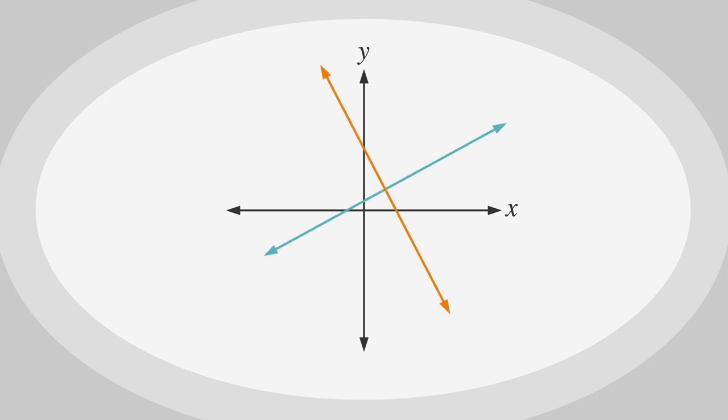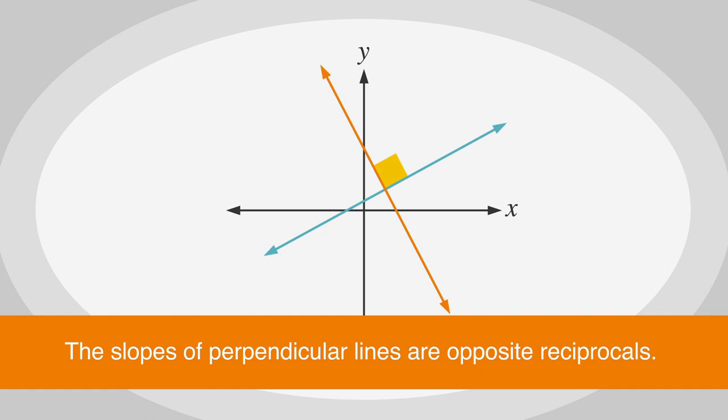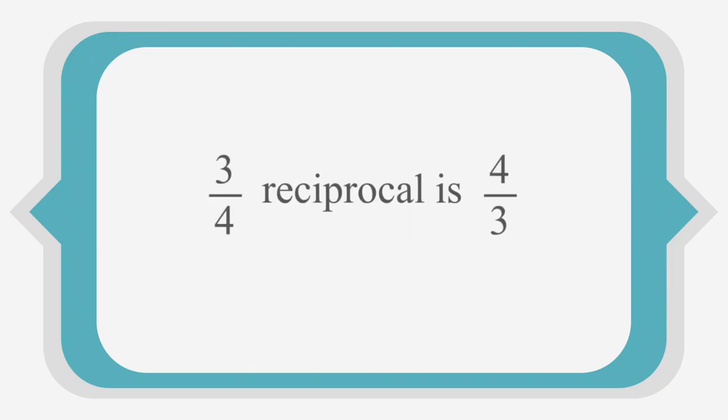Next, if two lines meet at a 90-degree angle, they are perpendicular. The slopes of perpendicular lines are opposite reciprocals of each other. You probably know that the reciprocal of a fraction is a fraction turned upside down. For example, the reciprocal of 3 over 4 is 4 over 3. To get the opposite reciprocal, you just have to add one more step and change the sign of the reciprocal from positive to negative, or vice versa. In this example, the opposite reciprocal of 3 over 4 is negative 4 over 3.